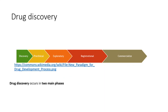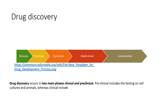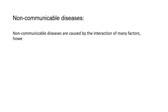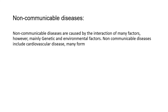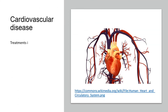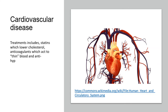Drug discovery occurs in two main phases: preclinical and clinical. Preclinical includes testing on cell cultures and animals, whereas clinical includes testing on human volunteers, followed by registration and commercialization of the drug or treatment. Non-communicable diseases are caused by the interaction of many factors, mainly genetic and environmental. These include cardiovascular disease, many forms of cancer, some lung and liver diseases, and diseases influenced by nutrition, including Type 2 diabetes. Treatments for cardiovascular disease include statins which lower cholesterol, anticoagulants which thin blood, and antihypertensive drugs which reduce blood pressure.